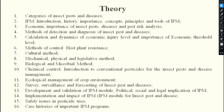The third outline covers the economic importance of insect pests and diseases: pest risk analysis, pest-defender ratio, and economic importance — including ETL (Economic Threshold Level), damage boundary, EIL (Economic Injury Level), and GEP. The fourth outline covers methods of detection and diagnosis of insect pests and diseases — how to detect and diagnose insect damage symptoms and disease-affected plant symptoms.